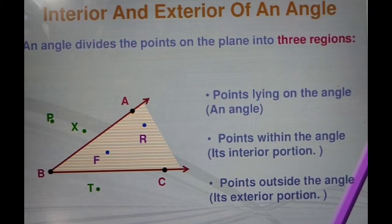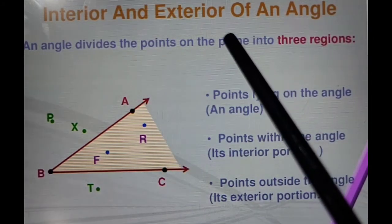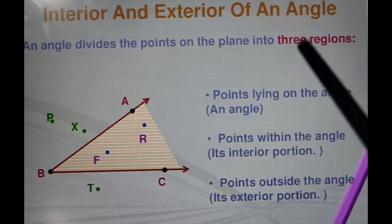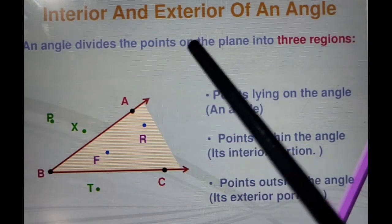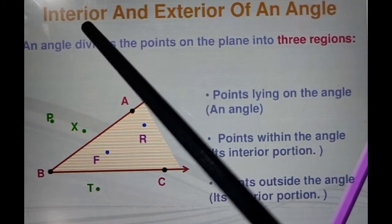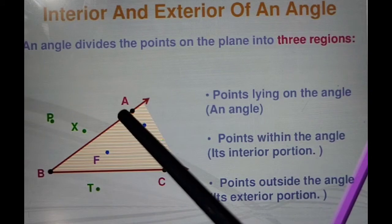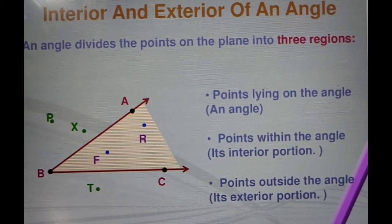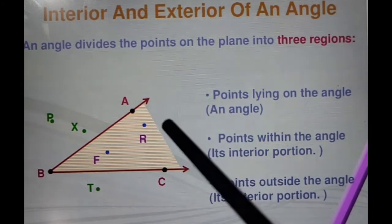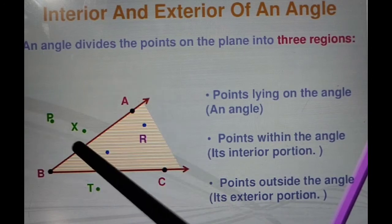Next are the interior and exterior of an angle. An angle divides the points on the plane into three regions. First, the point lying on the angle — that is called on the angle, like points A and C on the ray of the angle. Next, points within the angle, for example points R and F are within the angle — this is actually in the boundary of angle ABC, the shaded portion you can see.